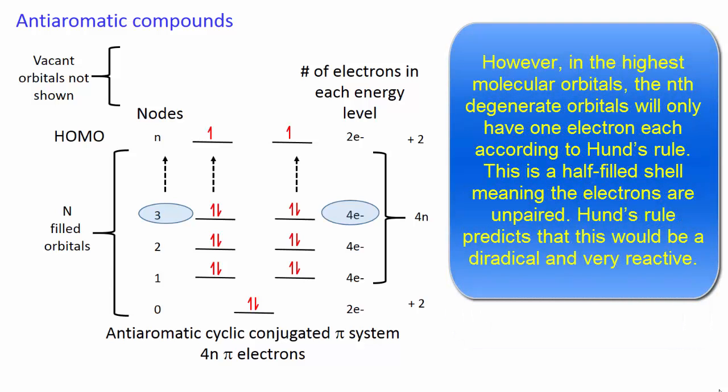Each of these energy levels will have 4 electrons. However, in the highest occupied molecular orbital, the nth degenerate orbitals will only have 1 electron each, according to Hund's rule. This is a half-filled shell, meaning the electrons are unpaired. Hund's rule predicts that this will be a diradical and very reactive.